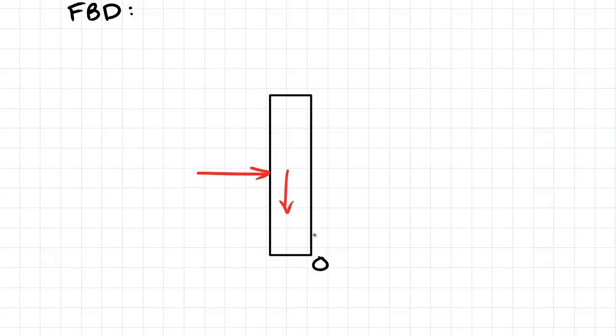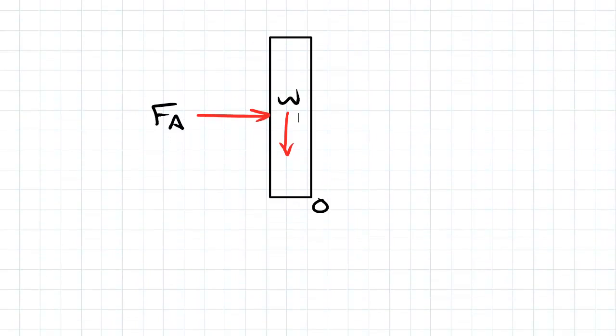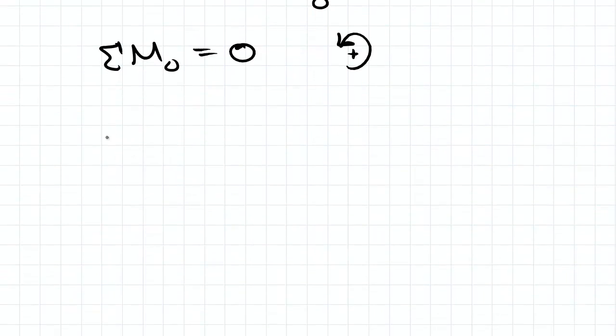So if we take our moments around this point, we have sigma M_O equals zero. Of course, clockwise is positive. We have negative F_Ax, in this case it's only in the horizontal direction, times 0.05, which is the height of the lever arm, plus W times 0.01 equal to zero.